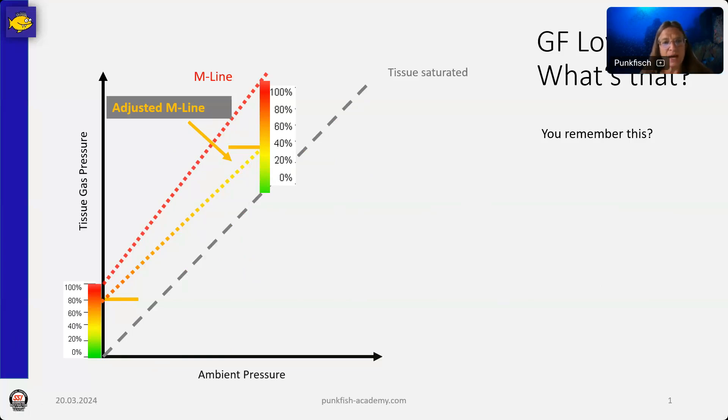So here on this, I did just put in the gradient factor low at 40%. We reach 40% of the M value, of the M line, when we want to do our first stop. And I did put, as an example, just as an example, I don't say this is a good pair. I just use this as a very random example. I do not dive this pair, okay? But I did set the gradient factor high as an example to 80, which means we are willing to come out of the water with 80% of the M value.